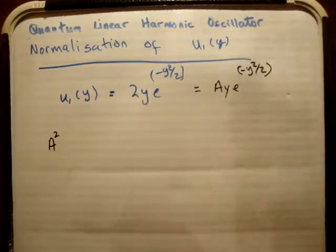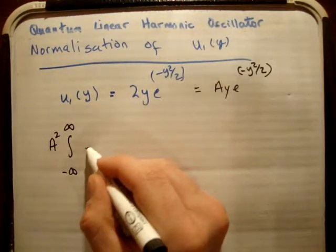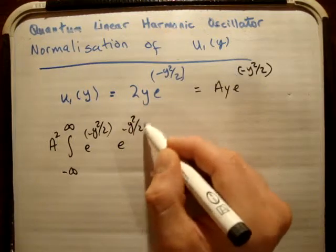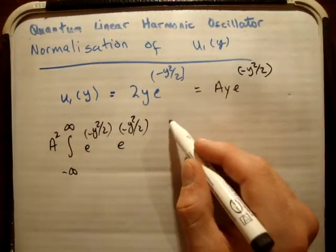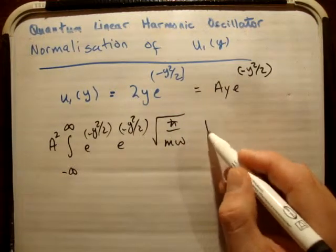So we get the integral from negative to positive infinity of e to the minus y squared over 2 times e to the minus y squared over 2. And that's going to be multiplied by h bar over m omega root of dy.